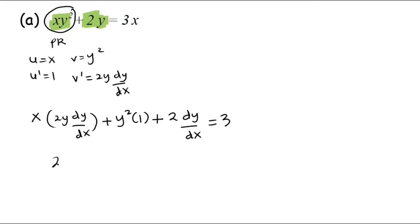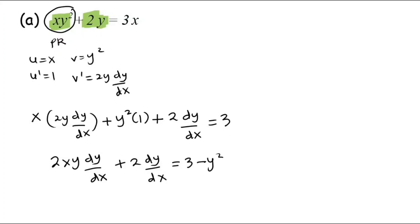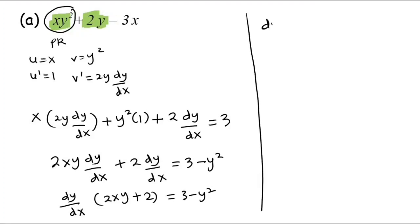Simplifying, we collect terms with dy/dx: 2xy·dy/dx + 2·dy/dx, and bring terms without dy/dx to the other side, giving 3 − y². Factorizing dy/dx: (2xy + 2)·dy/dx = 3 − y². Therefore dy/dx = (3 − y²) over (2xy + 2).